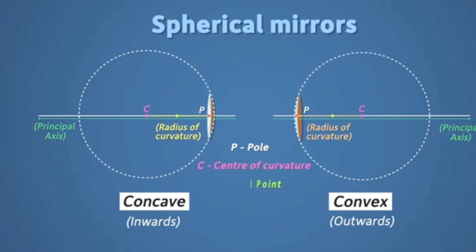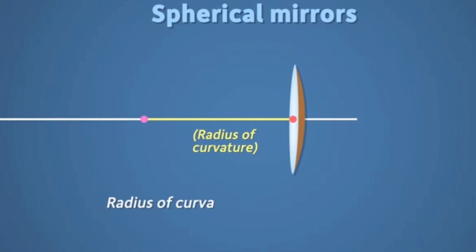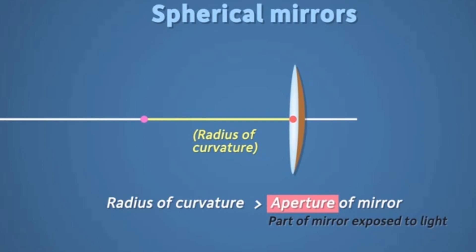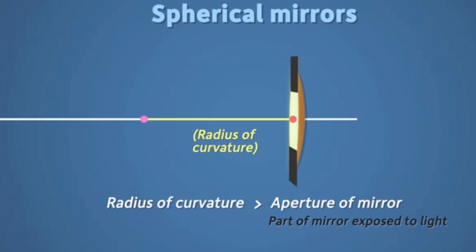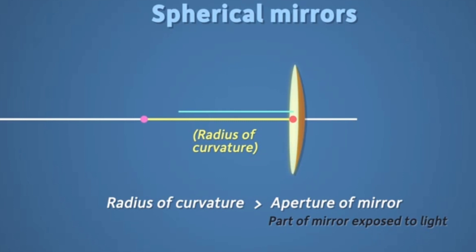Another important term: the midpoint of C and P is called the focal point, and the length from the focal point to the pole is known as the focal length of the mirror. One important assumption we make is that the aperture of the mirror is always very small compared to the radius of curvature. Aperture means the length of the reflecting surface exposed to light.